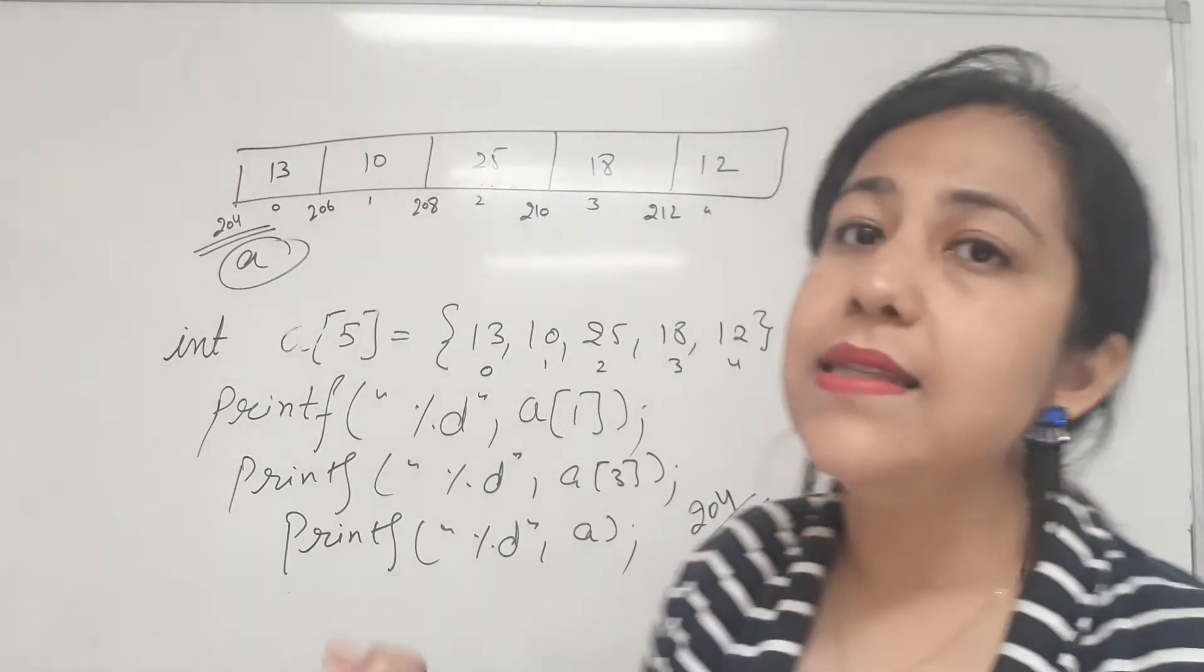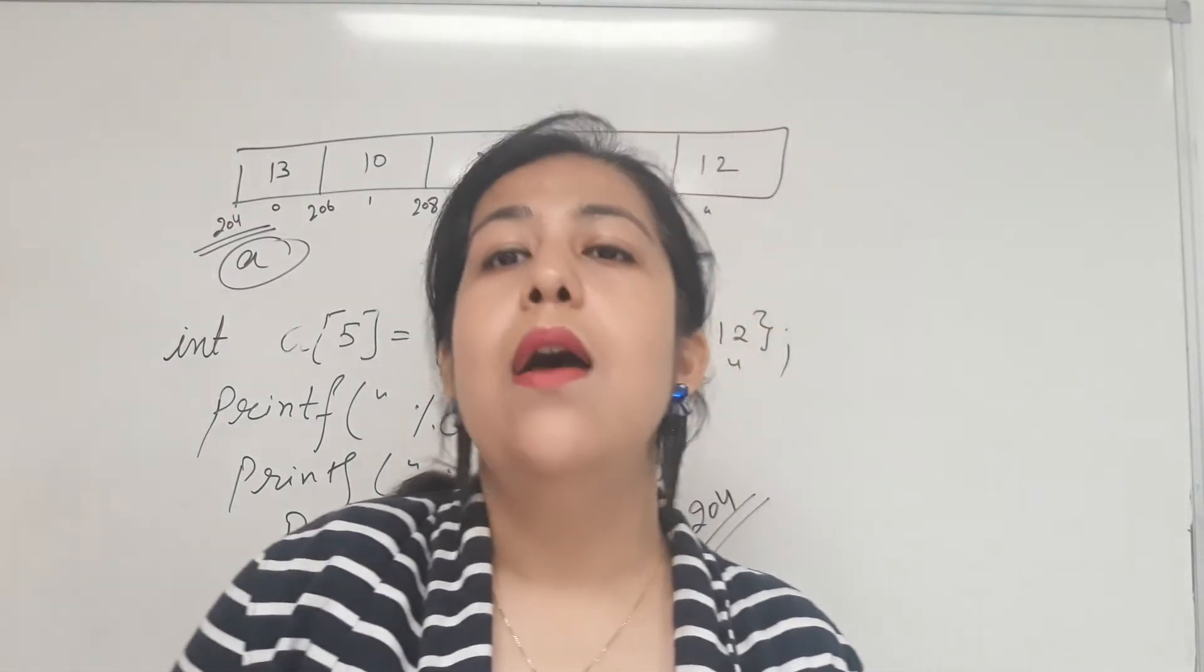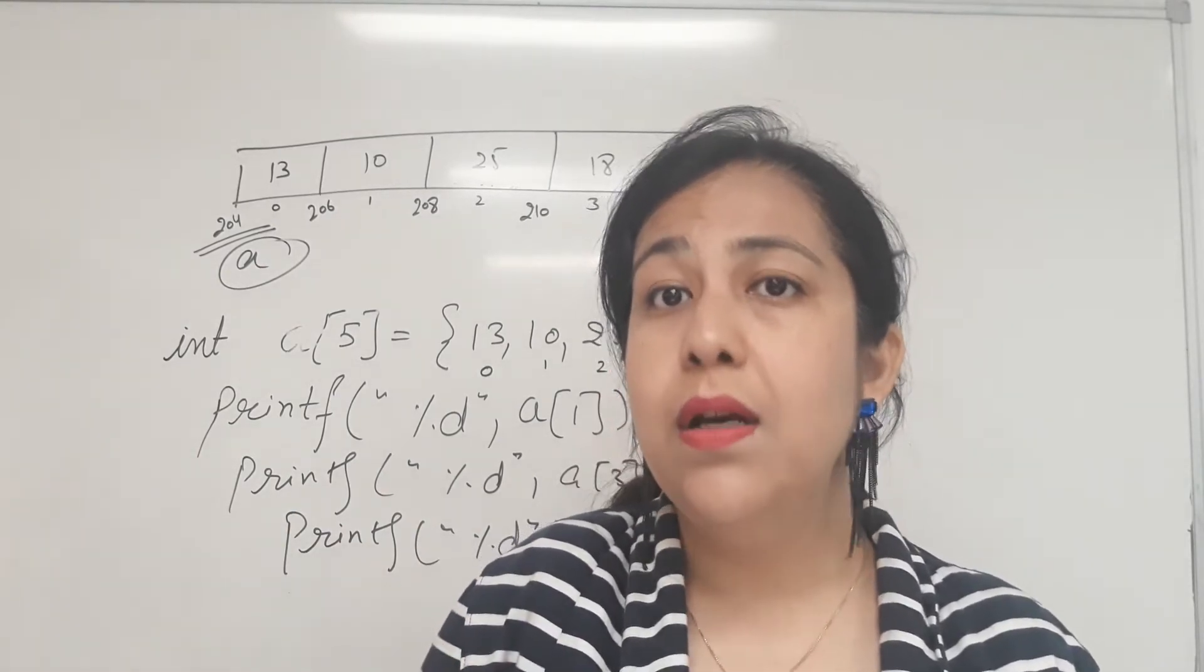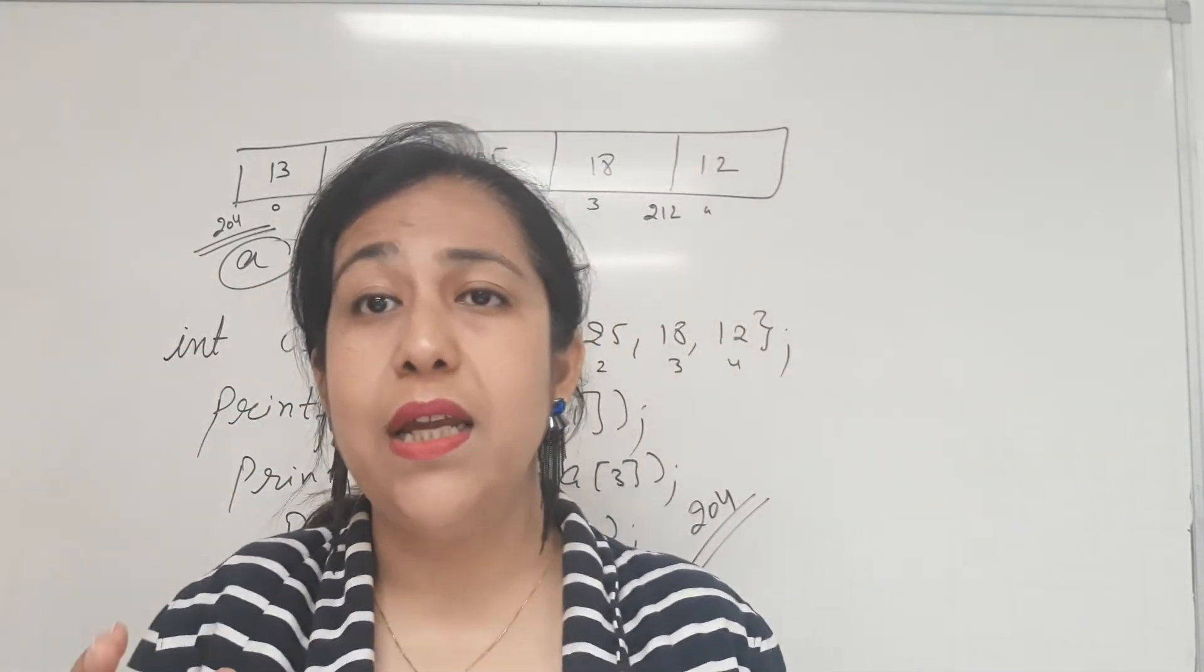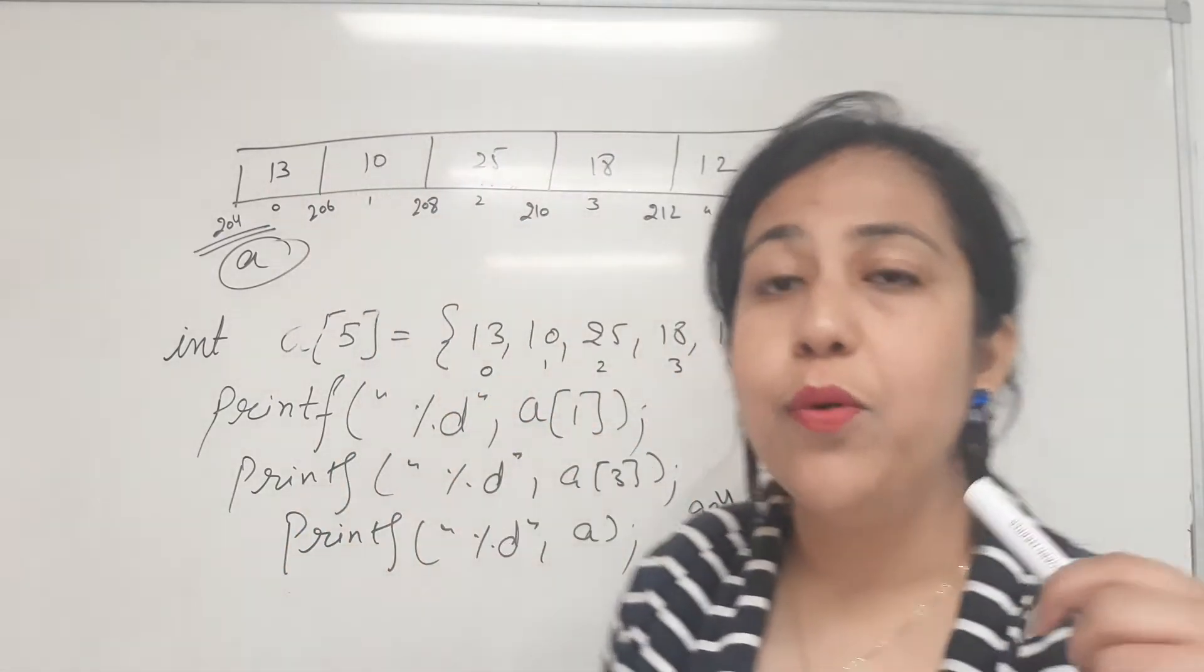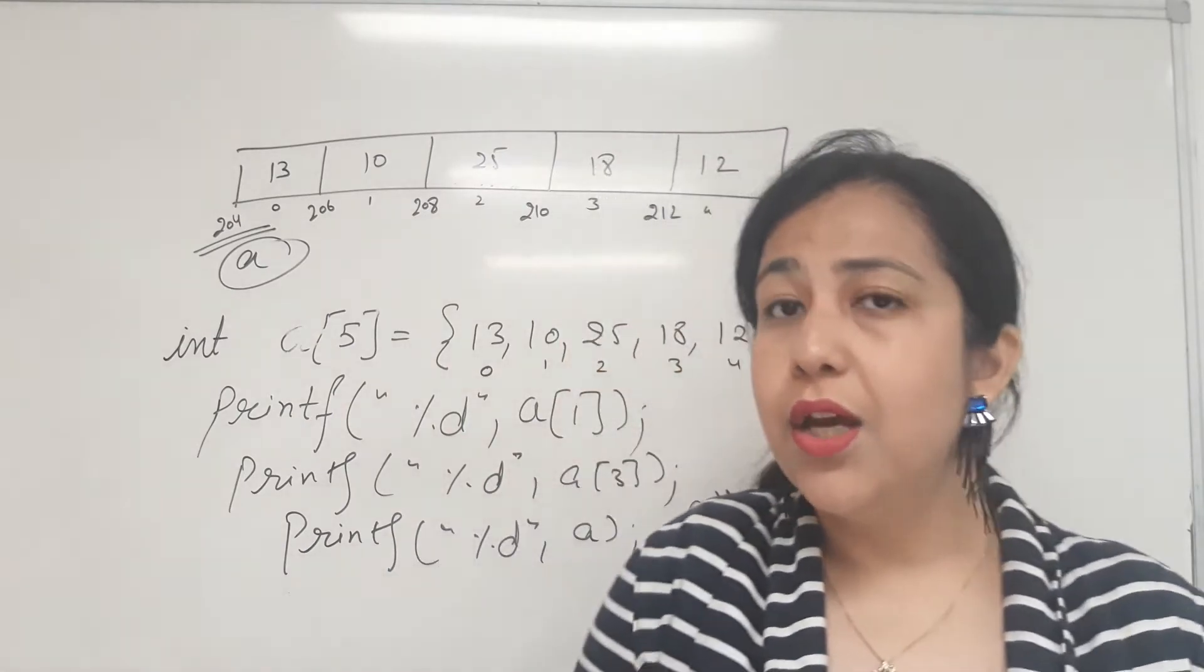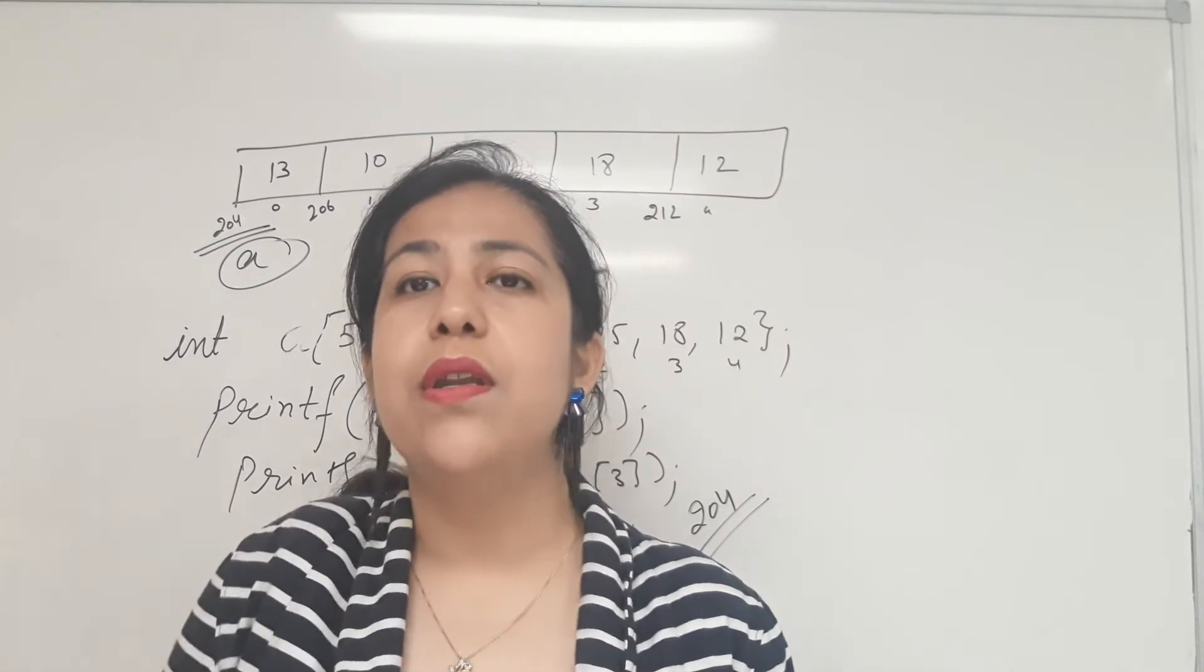So addresses are usually unsigned integers. Technically we should print it with %u, but with %d it will also print. If your address is up to 32,767, you will see a positive number, but if it's larger, then a negative number will show because you're using %d. But anyhow, we don't need to show addresses because we're making programs for the user. User is not bothered about that. So why are we doing this?